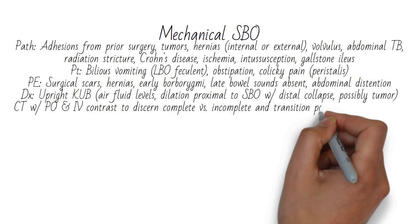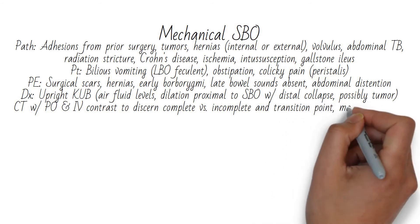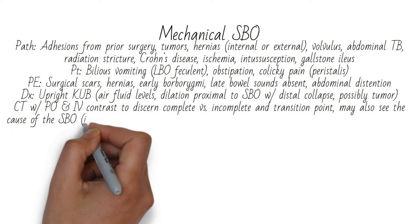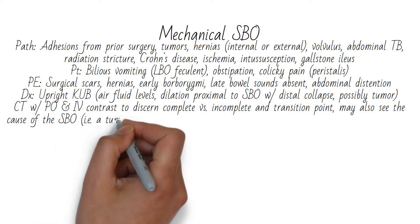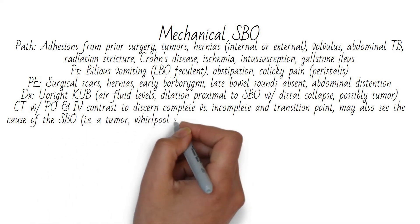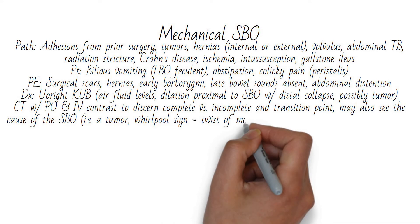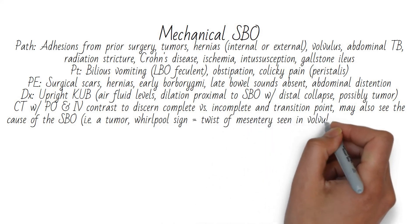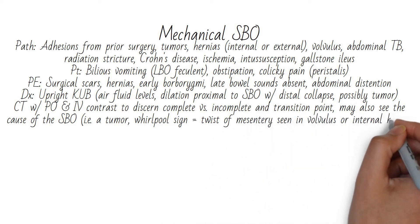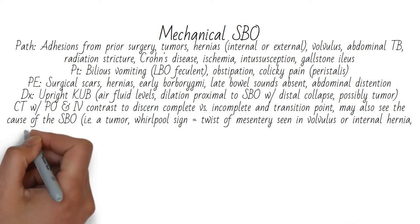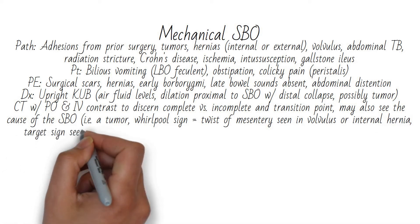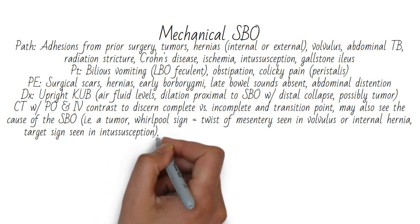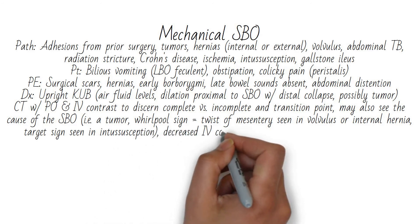You may also see an obstructing mass on KUB. CT with PO and IV contrast will help discern complete versus incomplete obstruction based on a transition point — complete obstruction lets no contrast through, while incomplete obstruction lets some through.